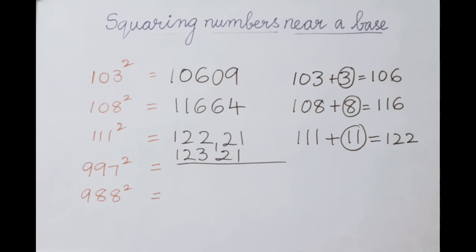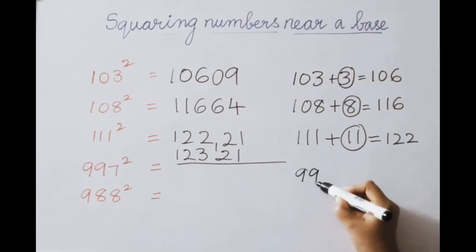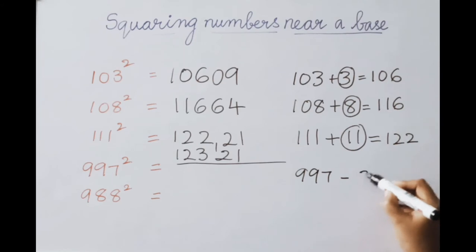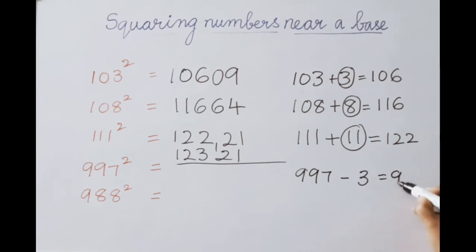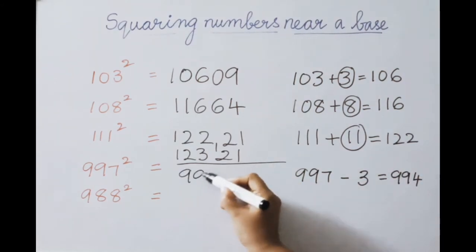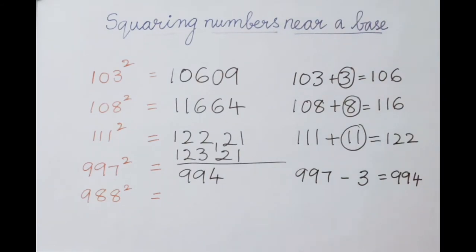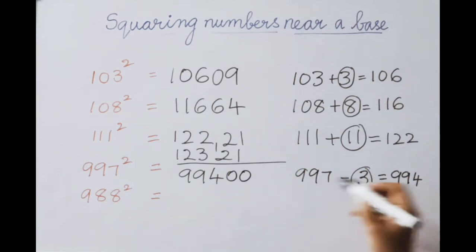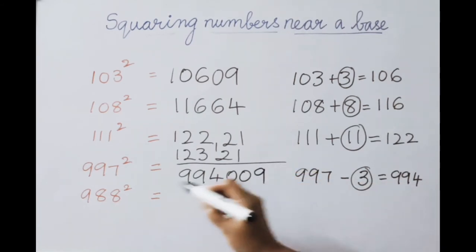Next example: 997 squared. 997 is nearer to 1000, so base is 1000. 1000 minus 997 equals 3 — deficient value is 3. Subtract: 997 minus 3 equals 994 — that is the first part answer. Square the deficient value: 3 squared is 9. Base 1000 means 3 digits allowed, so write 009. So 997 squared equals 994009.